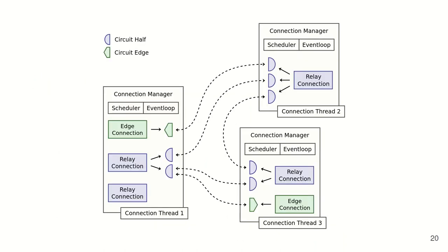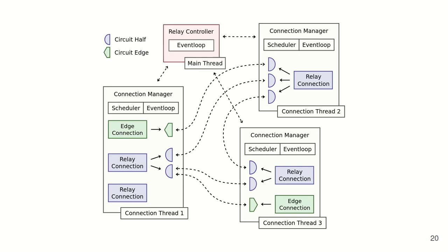For example, here we have three connection threads, each with their own connection manager. Network data which arrives on one connection is passed to its circuit half, travels across a thread-safe channel to its paired circuit half — which possibly could be in another thread — and can later be sent in that circuit half's connection. The relay controller running on the main thread communicates with each connection manager in order to provide the global state needed for creating new connections and circuits and more.